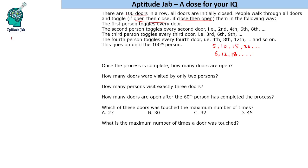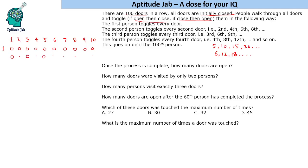Let us say there are ten doors: 1, 2, 3, 4, 5, 6, 7, 8, 9, 10 — all initially closed. When the first person comes, they open all the doors. The second person will target doors 2, 4, 6, 8, 10 and close them, while the rest remain in the previous state.